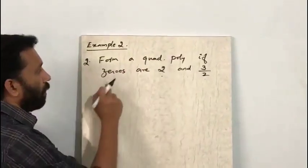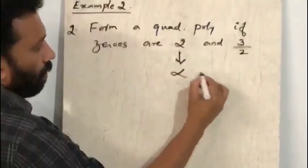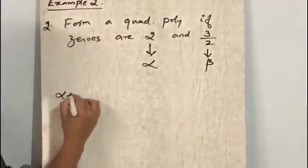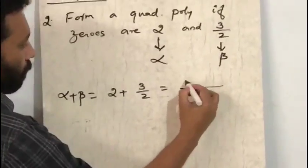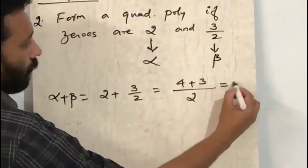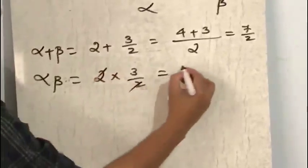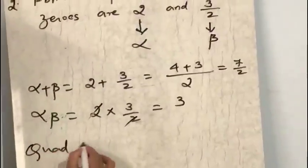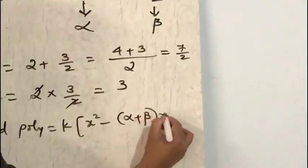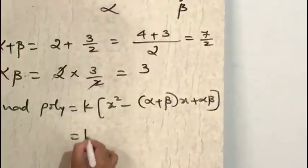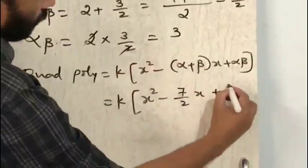Example 2: Form a quadratic polynomial if zeros are 2 and 3/2. Take alpha equal to 2 and beta equal to 3/2. So alpha plus beta equals 2 plus 3/2. Taking LCM as 2, it becomes 4 plus 3, that is 7/2. Alpha beta equals 2 into 3/2; the 2s cancel out, giving 3. So the quadratic polynomial is k into x squared minus (alpha plus beta) into x plus alpha beta, that is k into x squared minus 7/2 x plus 3.